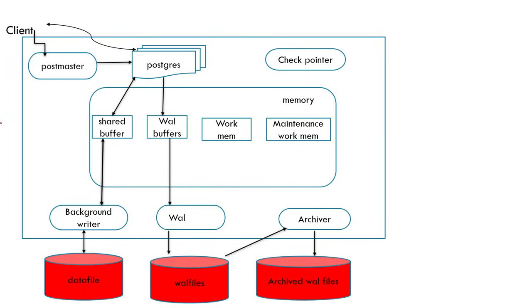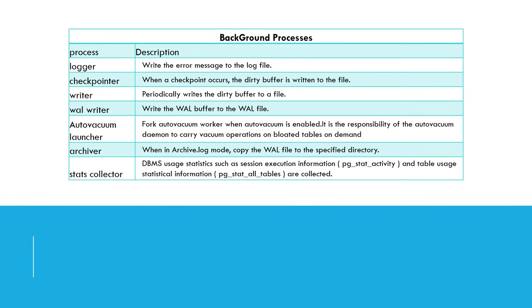To summarize the architecture: we have the postmaster process as the main process, then the PostgreSQL process. The important memory areas are: shared buffer (where read values from data files are held), WAL buffers (where changed data is held before being written to WAL files), work memory, and maintenance work memory. The background writer writes dirty buffers to the data files. The WAL background process picks up changed values from WAL buffers and writes them to WAL files. If archiving is enabled, they are finally moved to archived WAL files.